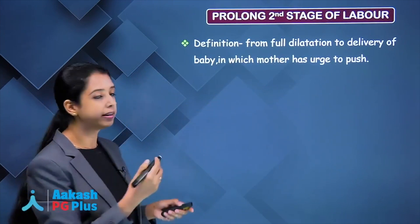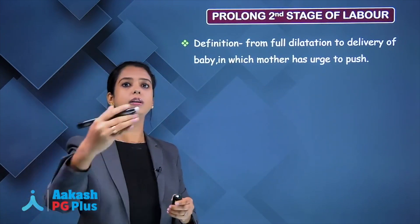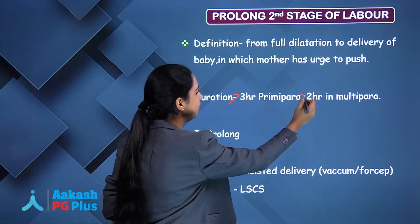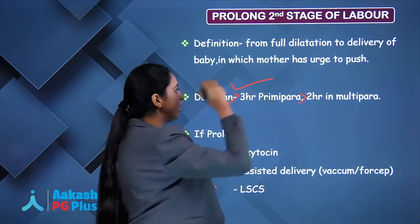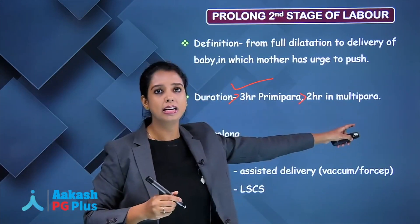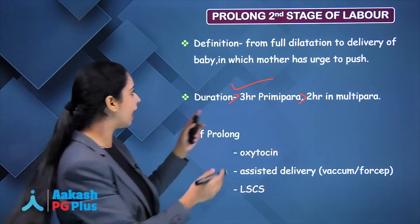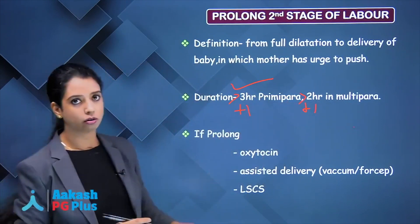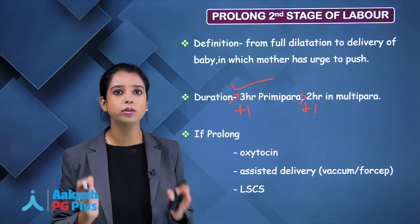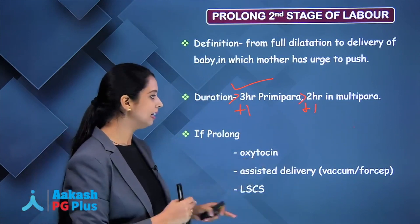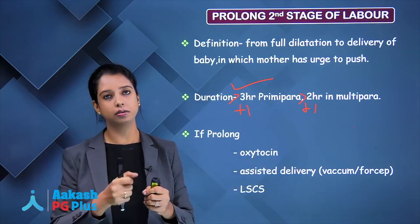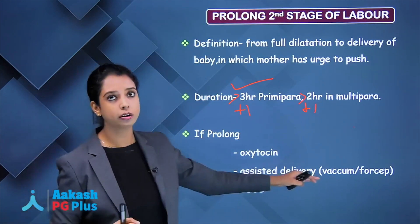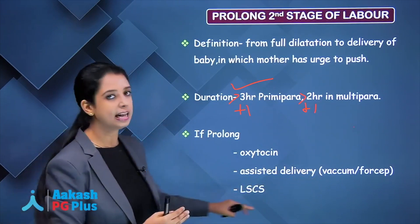Prolonged second stage of labour — the second stage goes from full dilatation to delivery of the baby. It is prolonged if more than 3 hours in primigravida or more than 2 hours in multipara, without epidural. With epidural, add 1 hour to each. Management: check contractions, start oxytocin, then assist delivery with vacuum or forceps. If baby still doesn't come or there is cephalopelvic disproportion, perform LSCS.